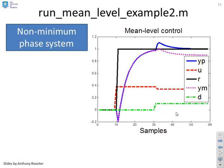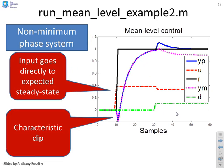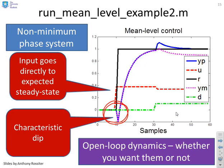Here's another example. This one's a non-minimum phase system. Again, you'll see the input is essentially a step. You've come straight to the steady-state value. You've got the characteristic dip in the behaviour, because it's a non-minimum phase system. So you've got open-loop dynamics. And here's the key thing, whether you want them or not.